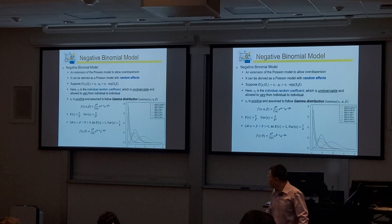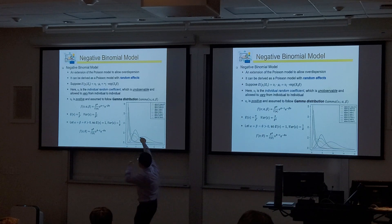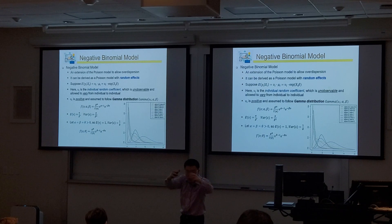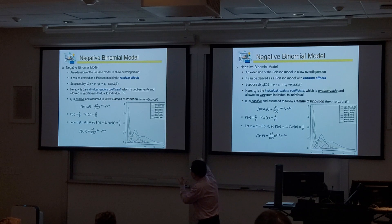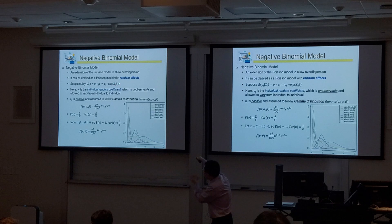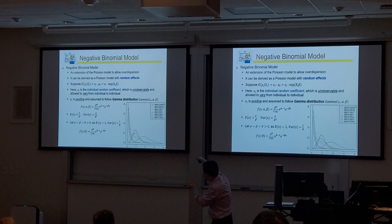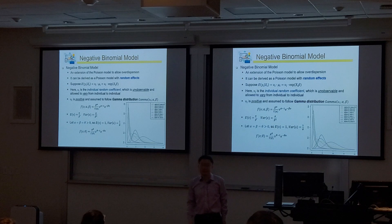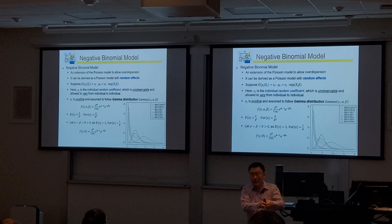For our model, we model mu_i — the coefficient for each individual — to follow the gamma distribution. For each individual observation i, we draw a random value from this gamma distribution and make that mu_i. We have x_i, the x variable values for that observation, which determines exponential of x-beta. Then mu_i multiplied by that exponential of x-beta becomes lambda_i for that particular observation, and y_i follows the Poisson distribution governed by this lambda_i.